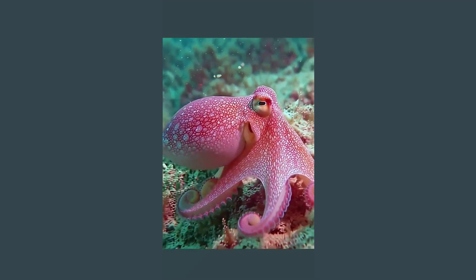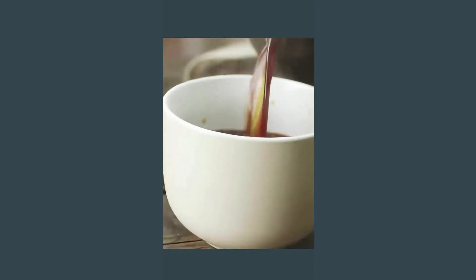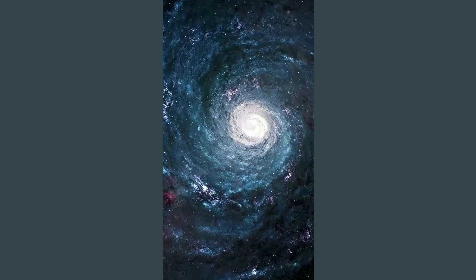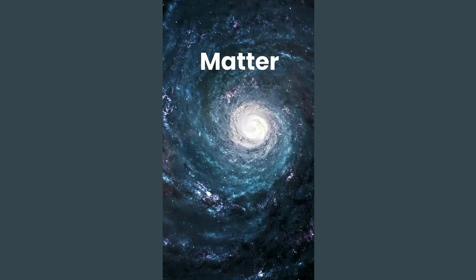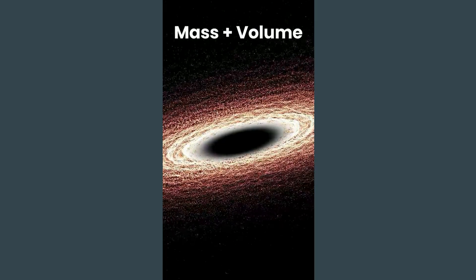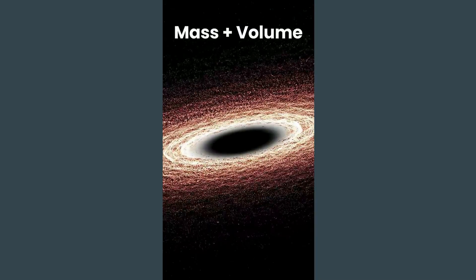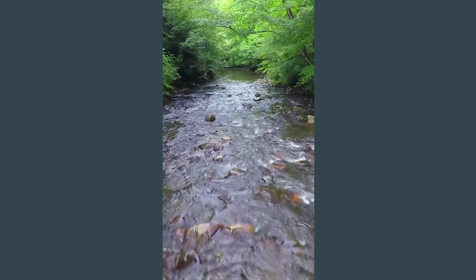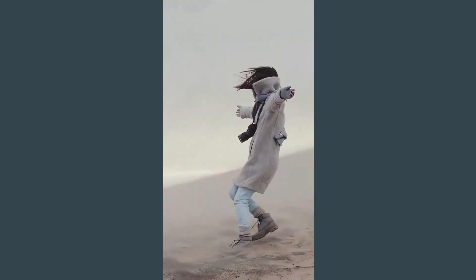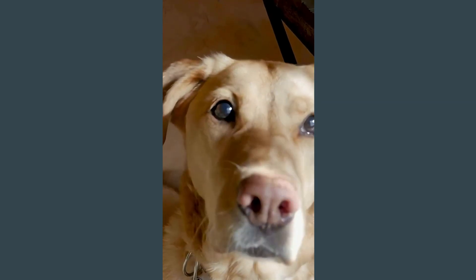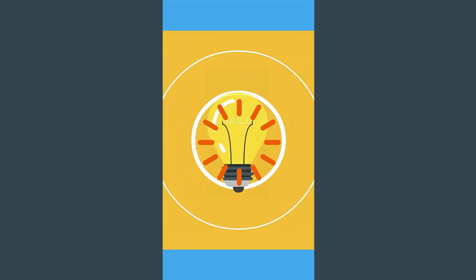What do these objects have in common? They are all composed of matter and also are examples of matter. Matter is anything that has mass and occupies space — in other words, has volume. Matter can take many forms. This water is a liquid, the wind represents a gas, and this dog is a solid. Each of these items have both mass and volume.